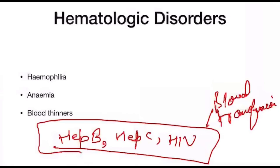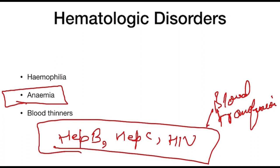Anemia is very important because it reduces the oxygen-carrying capacity of red blood cells. Some patients may have G6PD deficiency — glucose-6-phosphate dehydrogenase deficiency — or sickle cell disease, which is more common in Africa, and can cause oral lesions, infections, and delayed wound healing. Leukemia and lymphoma are also factors which need to be evaluated.